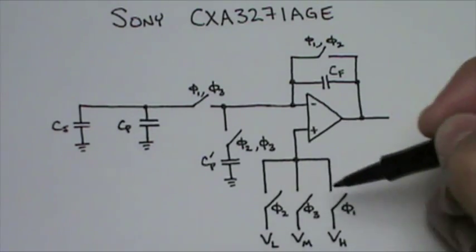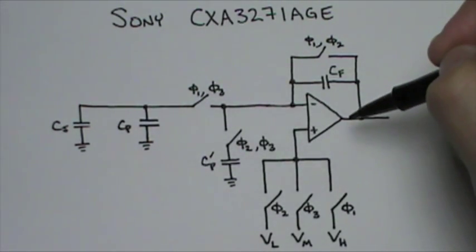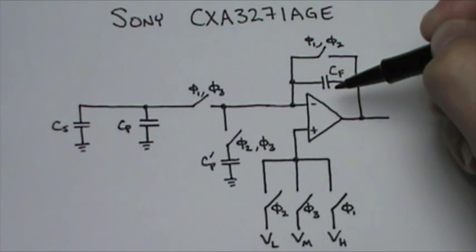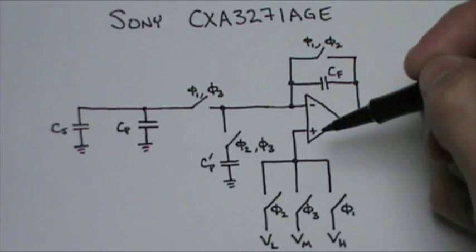VM is chosen to be midway between VL and VH, and the amplifier amplifies the charge according to the capacitance of the feedback capacitor.